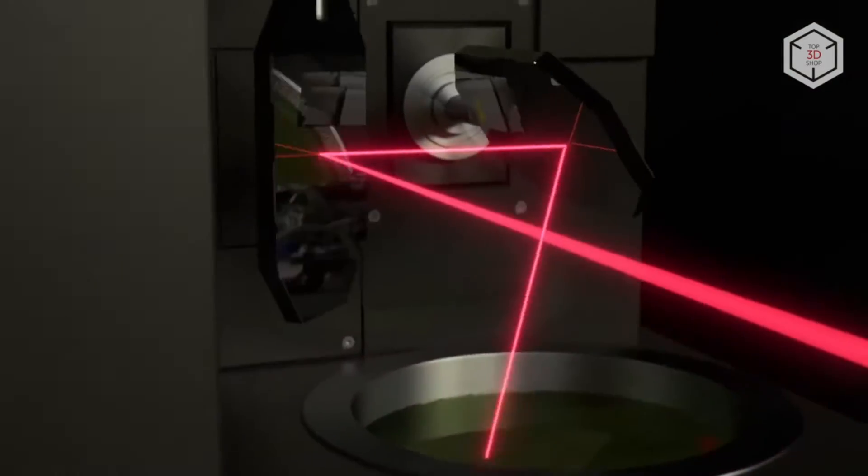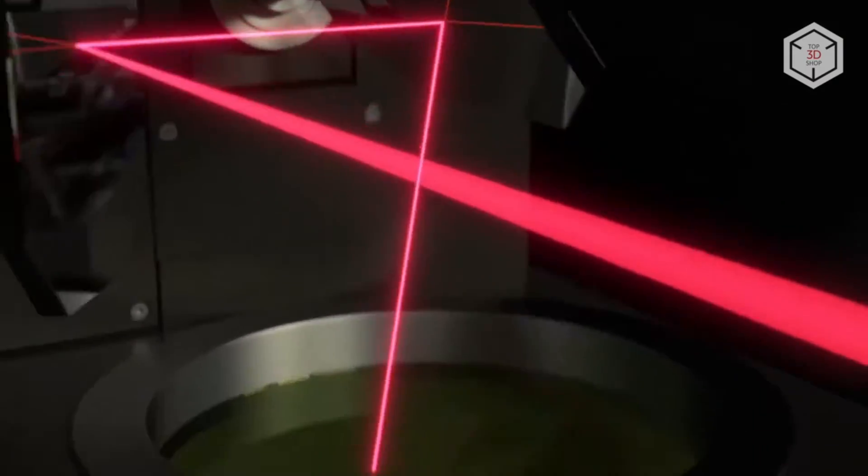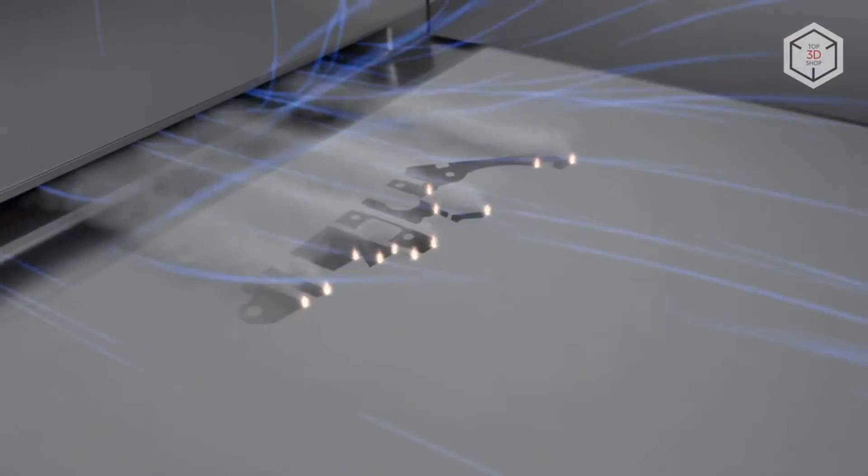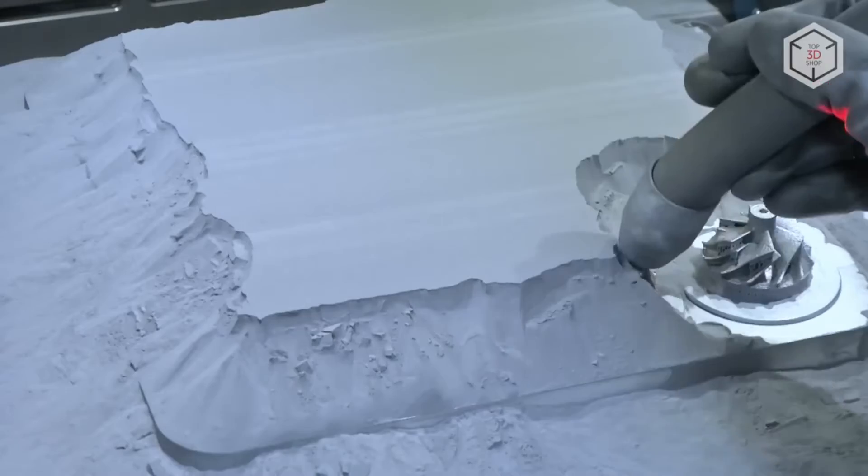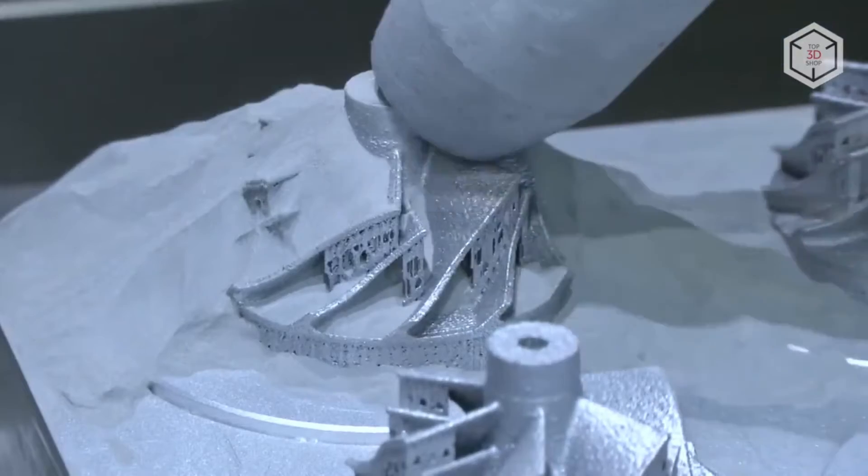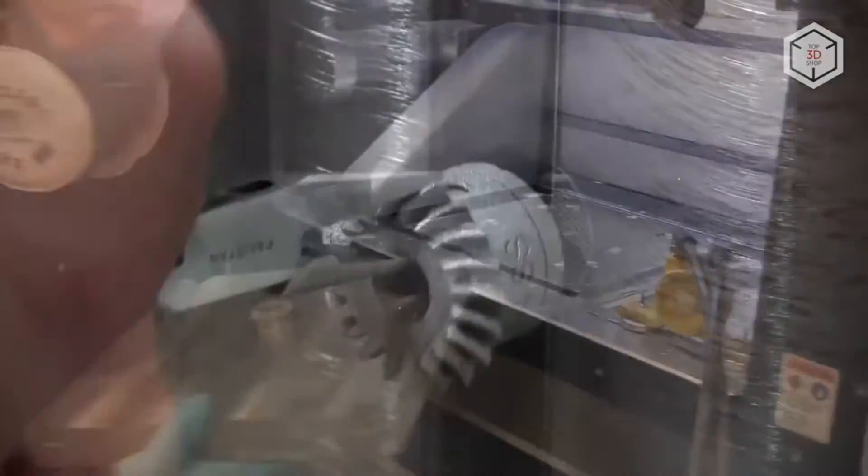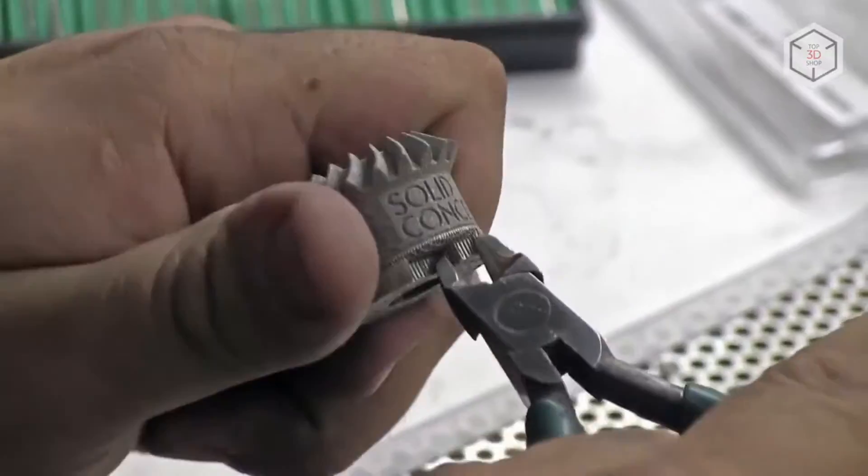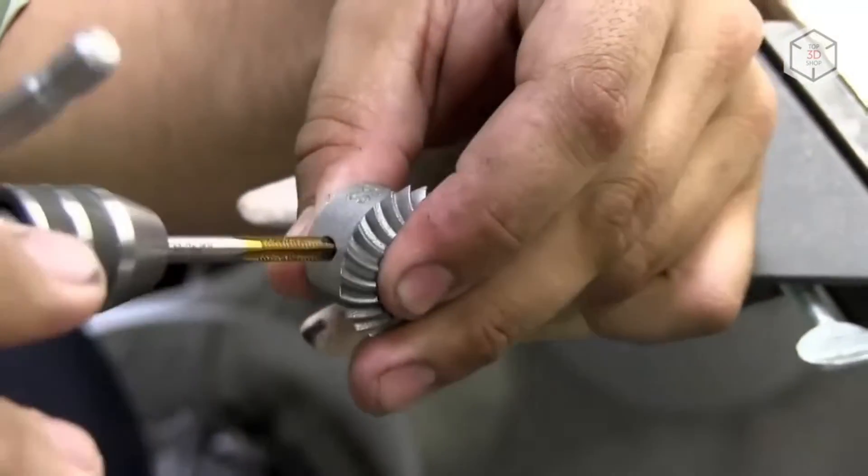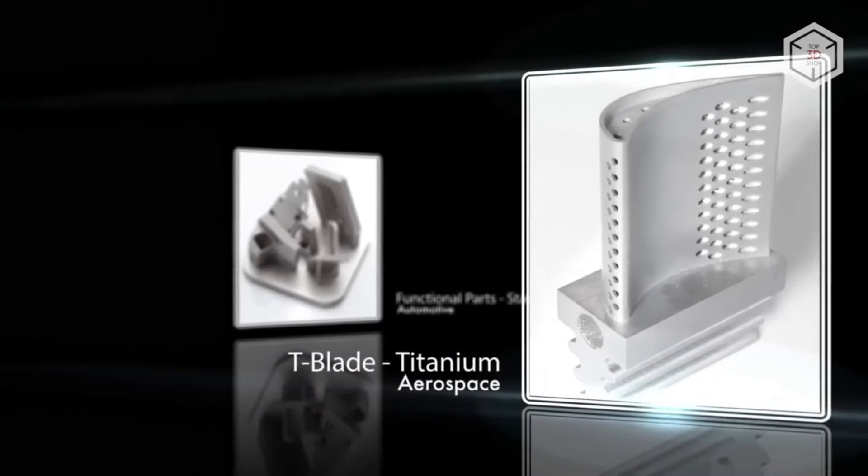The DLLs technology has some benefits such as it enables the production of high-strength metal parts with complex geometries, making it valuable for aerospace, automotive, and medical applications. And it offers design freedom and can reduce material waste compared to traditional manufacturing methods. But it also has some limitations such as the DLLs equipment and materials are costly. And the process can be slower compared to other metal 3D printing techniques. And the surface roughness and porosity may also be concerns that require additional post-processing steps.